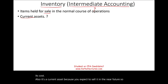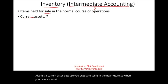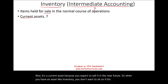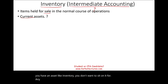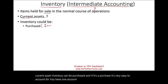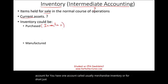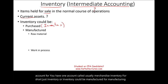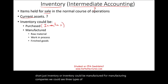You want to sell inventory immediately if you can — that's why it's a current asset. Inventory can be purchased, and if it's purchased, it's very easy to account for: you have one account called merchandise inventory. Inventory could also be manufactured. For manufacturing companies, we could see three types of inventory accounts: raw material, work in process, and finished goods.